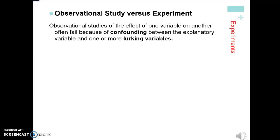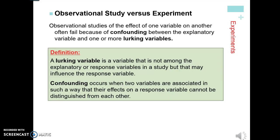Observational studies on the effect of one variable on another often fail because of confounding variables between the explanatory variable and one or more lurking variables. Think of confounding as a verb — you can't decide what causes the decreased amount of heart attacks: was it the exercise or was it the hormone replacement pills? A lurking variable is a variable that's not among the explanatory or response variables, but it influences the response. In this case, the lurking variable was the exercise or the diet — it's lurking in the background. Confounding occurs when those lurking variables are associated in a way that we don't know if the response is from the treatment or from the lurking variable.